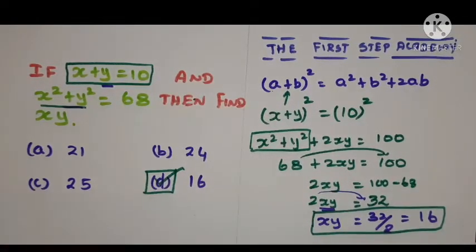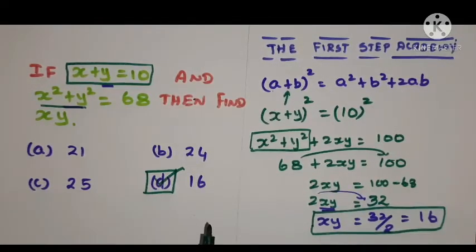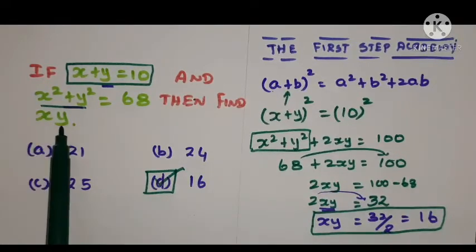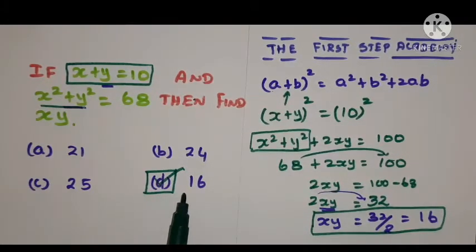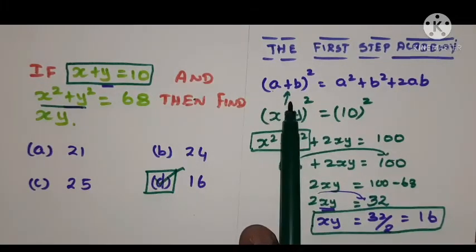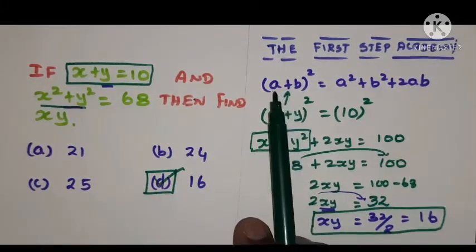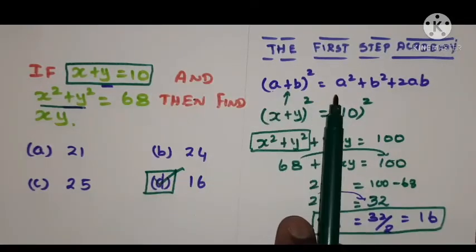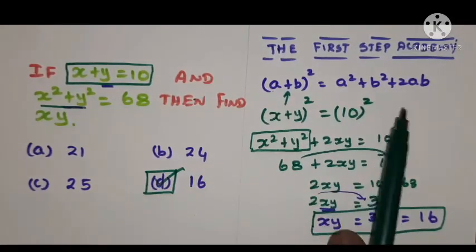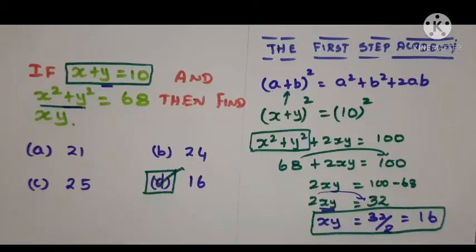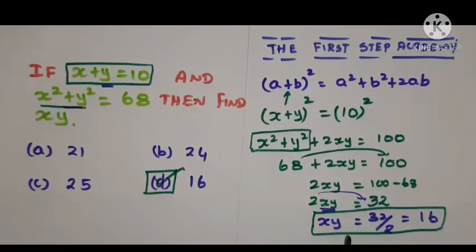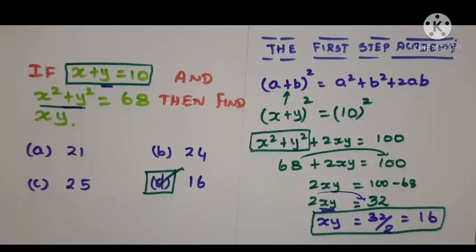Once again: if x plus y equals 10 and x squared plus y squared equals 68, then find x into y — the answer is option D, 16. We only needed to recall the basic algebraic formula (a + b)² = a² + b² + 2ab to easily find the answer. Hope you understand — thank you for watching. This is First Step Academy, Learn and Grow Educational Medium.